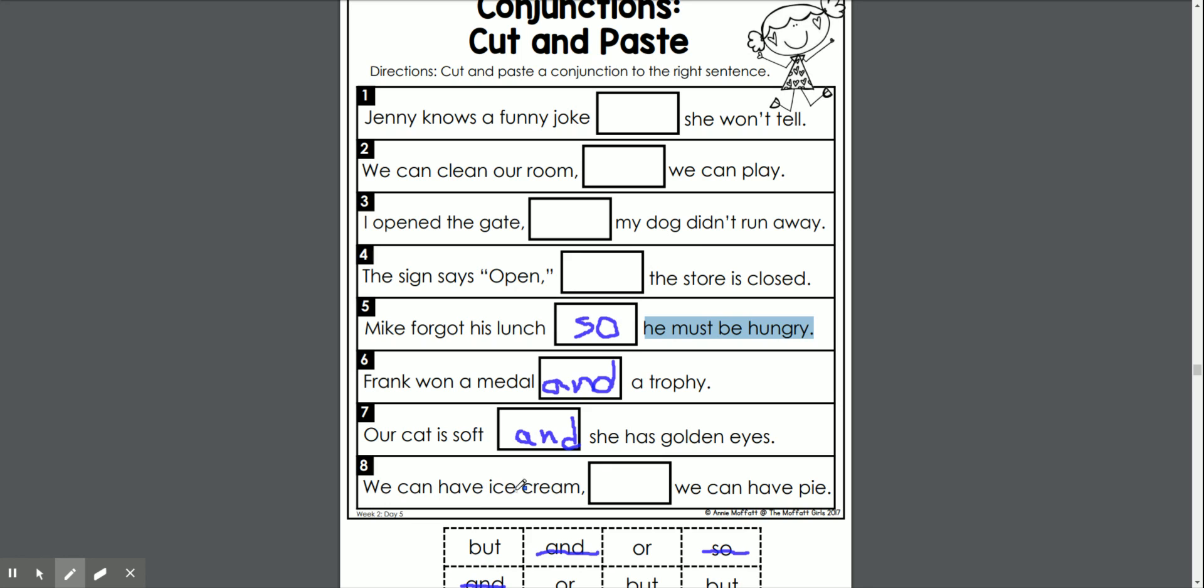We can have ice cream or we can have pie. So there's an or gone. The sign says open, but the store is closed. I opened the gate, but my dog didn't run away.